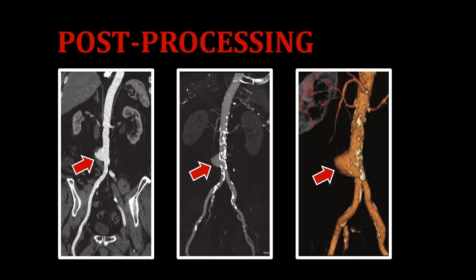Significant calcifications in the aorta and common iliac arteries are also very visible on the MIP, and we can still see that sac-like aneurysm at the level of the aortic bifurcation. In the last image to the far right, we're looking at the same patient with a similar view, but this time it's a 3D reconstruction — specifically, a volume-rendered 3D image. The red arrow is still pointing at the same area of concern: a sac-like aneurysm at the level of the aortic bifurcation.